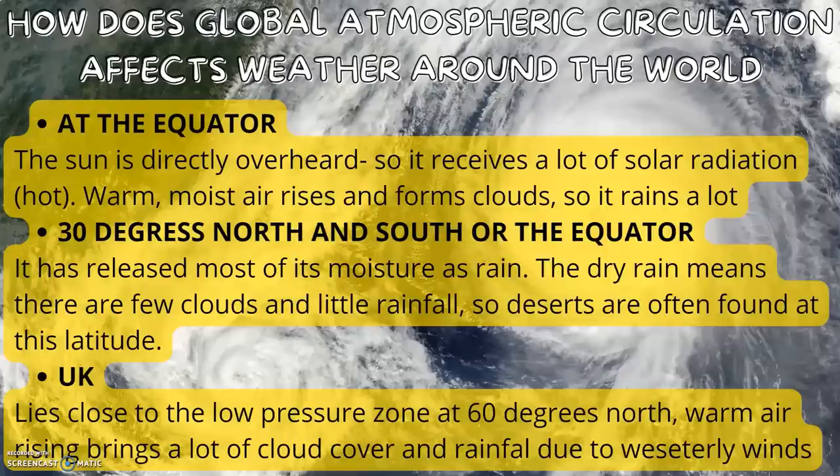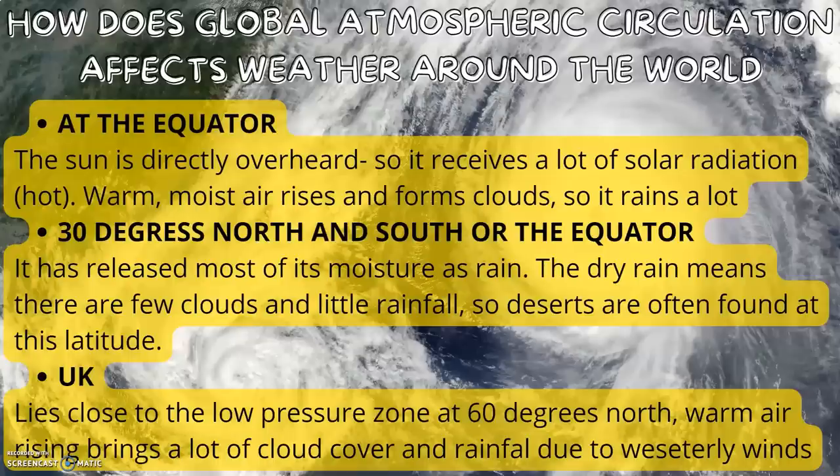How does global atmospheric circulation affect weather around the world? At the equator, due to the sun directly overhead, it receives a lot of solar radiation. Therefore, warm, moist air rises and forms clouds, so it rains a lot.